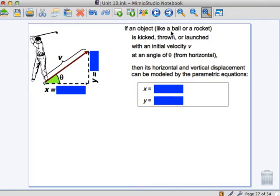So if we have an object like a ball or a rocket is kicked or launched with initial velocity v at an angle of theta from the horizontal, then its horizontal and vertical displacement can be modeled by the parametric equations as follows. I'll show you the formulas first and then I'll explain how we're getting them. So your x formula would be your magnitude times cosine theta, and theta is in degrees for all of the problems that we're going to look at in this unit, and then times t.